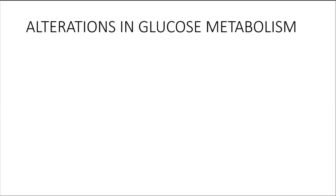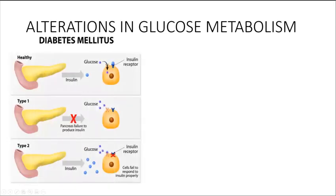We would be reviewing alterations in glucose metabolism, specifically diabetes mellitus. You would recall the beta cells of the pancreatic islets produce insulin, which is responsible for allowing glucose to enter into the cells to provide them with energy to function. That is what happens in a normal or healthy individual.